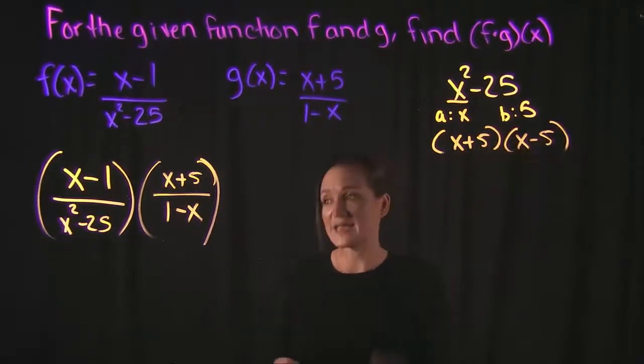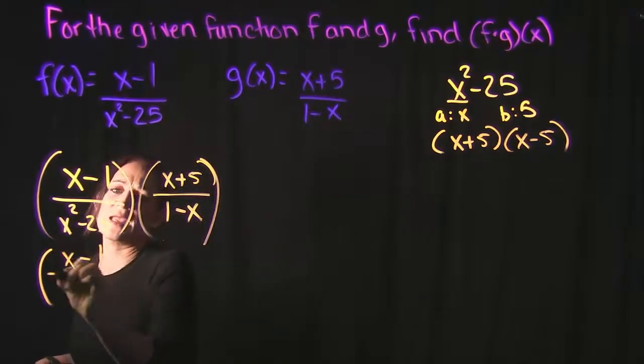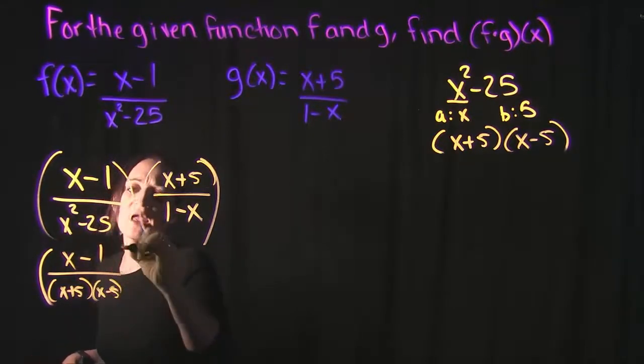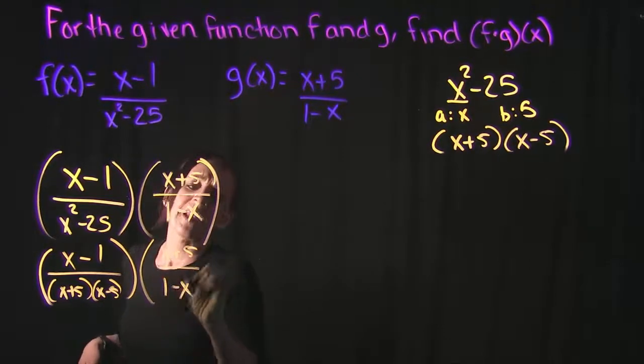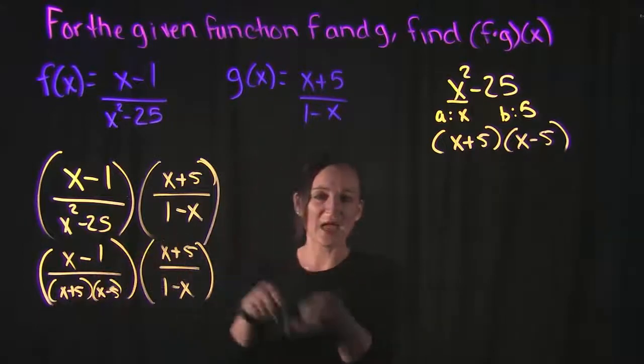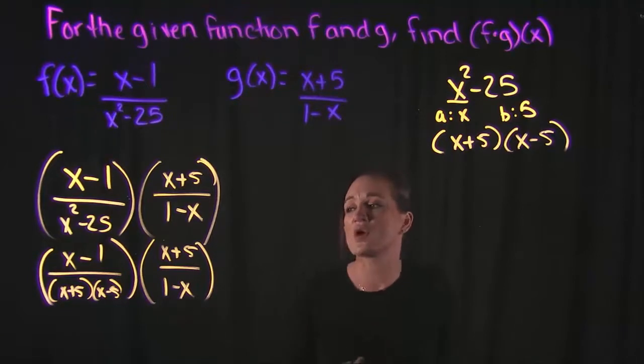So using the difference of squares formula, this means that this factors to x plus 5, x minus 5. So what I'm going to do is I'm just going to plug that in over here back for our denominator because we want everything to be in factored form. Now, when we multiply, we don't actually want to multiply everything together, like we don't actually want to foil it all out. What we're looking for is we're hoping for things to cancel.